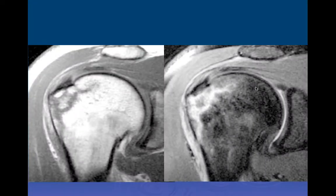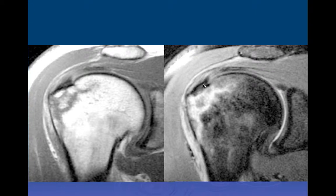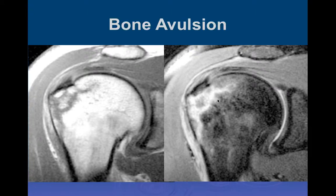One injury associated with the rotator cuff is a traction injury to the greater tuberosity. This patient had a skiing accident, fell on an outstretched arm, and had avulsion of the supraspinatus tendon. The tendon itself was strong enough where it didn't tear—which would occur in most older individuals. In this case it was the bone that was the weaker link, and it was the bone that fractured.